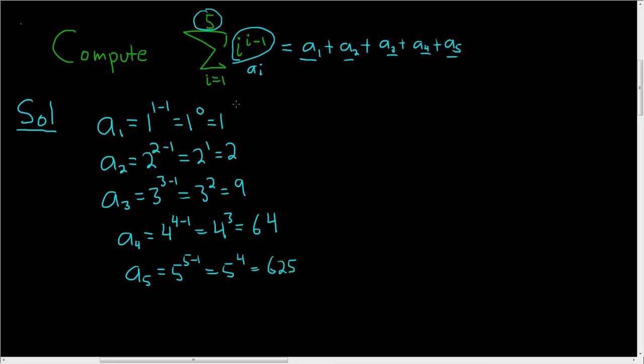So to get the final answer, you just add up all of these guys. So we're going to add them all up and that will be the answer. In fact, I'll do it right here. So it's 1, that's a sub 1, plus 2, that's a sub 2, plus 9, that's a sub 3, plus 64, that's a sub 4, plus 625, that's a sub 5. And if you do this in your head or you plug it into your calculator, you should get 701. And that is the final answer.